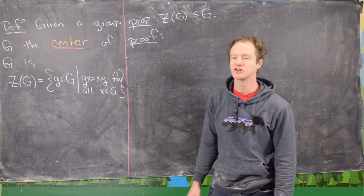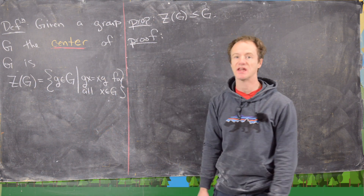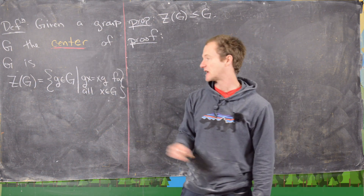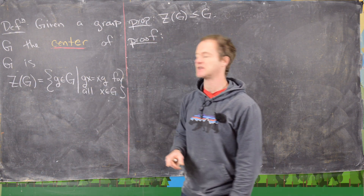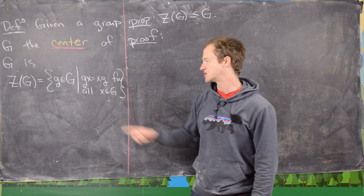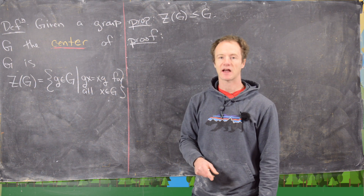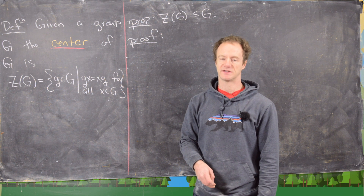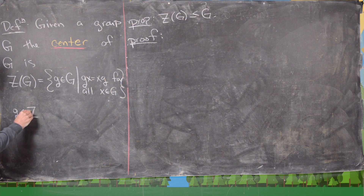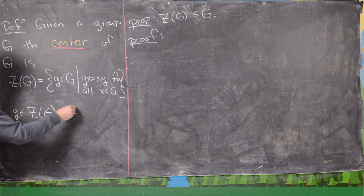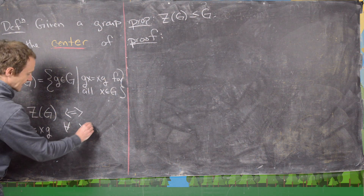In this video we want to look at the center of a group. Given a group G, the center of G is defined as follows. We use the notation Z of G, and that's going to be all elements of G where gx equals xg for all x in G. In other words, it's all elements of G that commute with all other elements of G. So little g is in Z of G if and only if gx equals xg for all x in G.